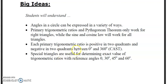We're going to look at the Pythagorean Theorem, how they relate to right angle triangles, and where we use sine and cos to solve using those triangles. Each primary trig ratio is positive in two quadrants and negative in two quadrants between 0 and 360 degrees. This is called the CAST rule.